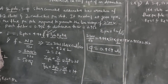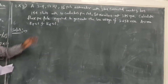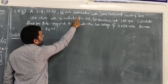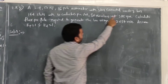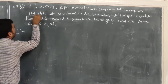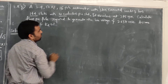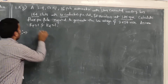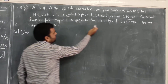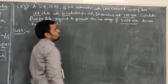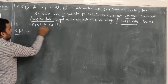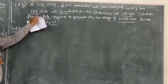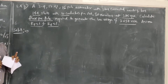We will take the next problem. The question is: a 50 Hz, 16-pole alternator with star-connected winding has 144 slots and 10 conductors per slot. It revolves at 375 rpm. Calculate the flux per pole required to generate a line voltage of 2657 volts. Assume pitch factor Kp = 1 and distribution factor Kd = 1. This is a similar example with different data.